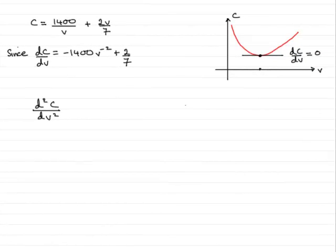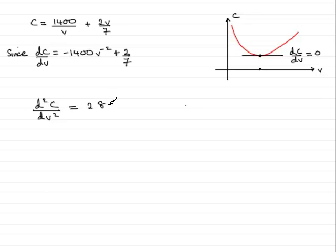In this part of the question, we're asked to find d squared c by dv squared, and we've got dc/dv from the first part of the question. So let's differentiate dc/dv to get d squared c by dv squared. In the usual way, differentiating this — just multiply the power with minus 1400, and that gives us 2800. Reduce the power by one, so that's v to the minus three. Differentiate two-sevenths — that's a constant, so it goes to zero. Tidying this up, we've got 2800 all divided by v cubed.